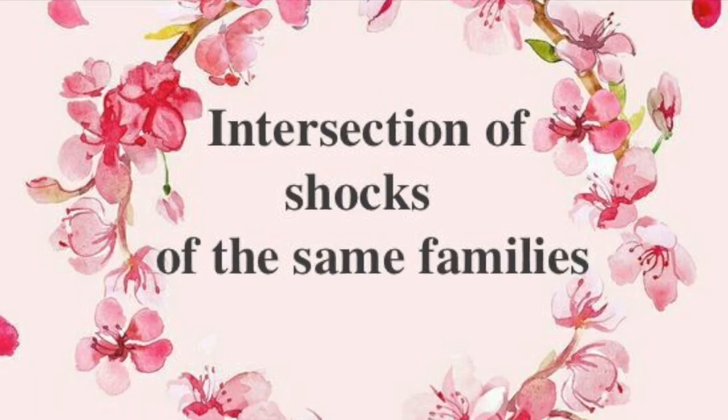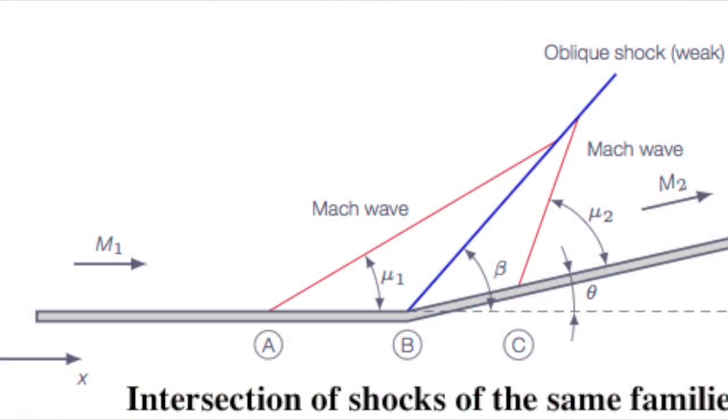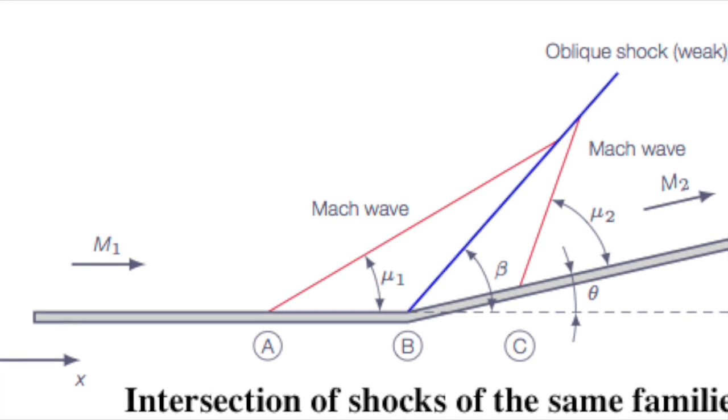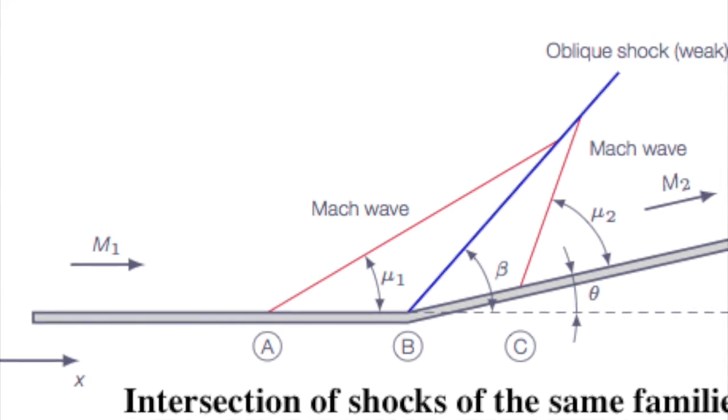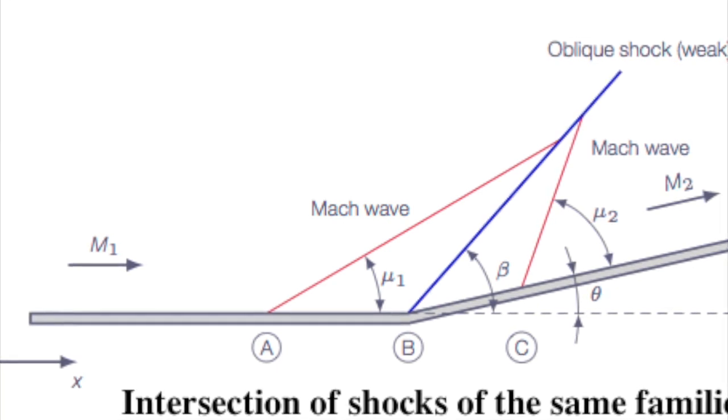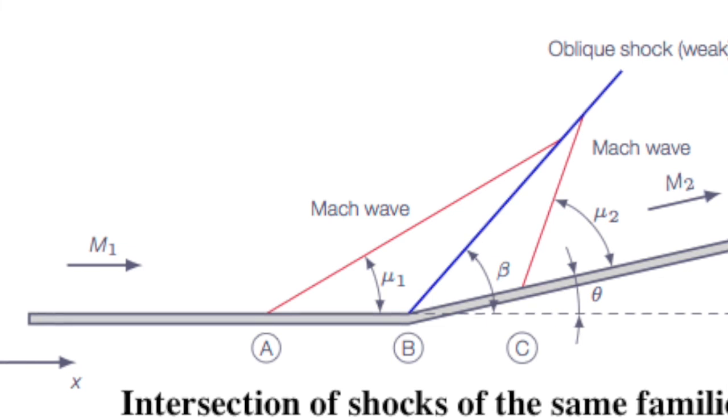Intersection of shocks of the same family: Consider a streamline passing through region 1, 2 and 3. The pressure and flow direction in region 3 are P3 and theta 3 respectively and are determined by the upstream condition in region 1 as well as the deflection angles theta 2 and theta 3. Properties in region 3 are processed by the dual shocks AC and BC. On the other hand consider a streamline passing through region 1 and 5.